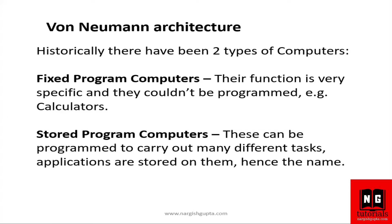Hello everyone, in this video we are going to discuss von Neumann architecture. Initially there were two types of computers: fixed program computers and stored program computers. Fixed program computers are computer systems which were designed to perform specific tasks and we cannot alter their functionality or add programs to them later on once they have been designed.